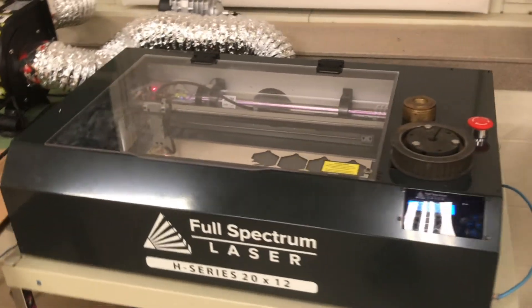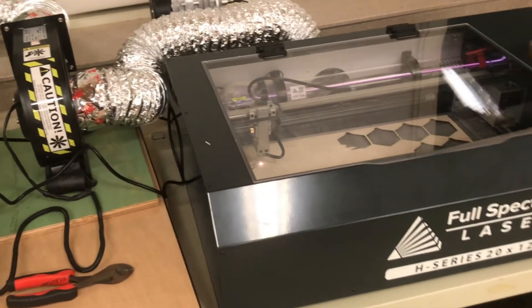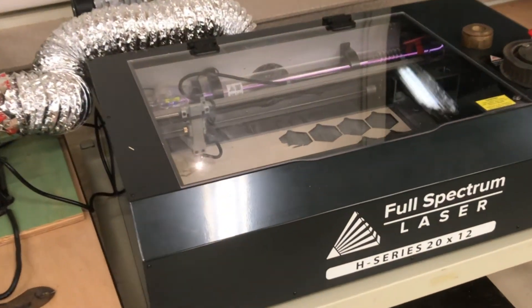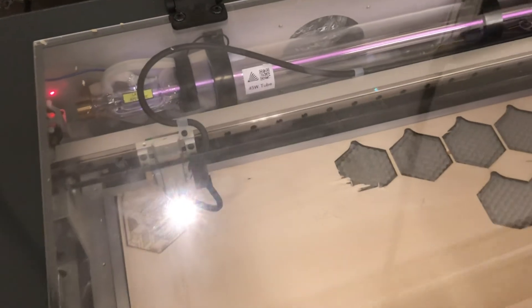This clip shows an example of a CO2 laser because of the gaseous tube directing the light towards the material and the wooden material that's being cut.